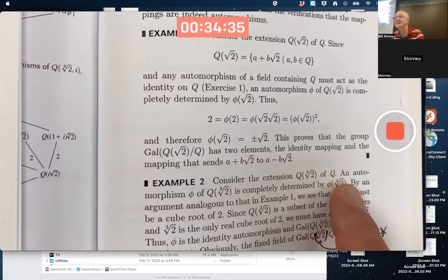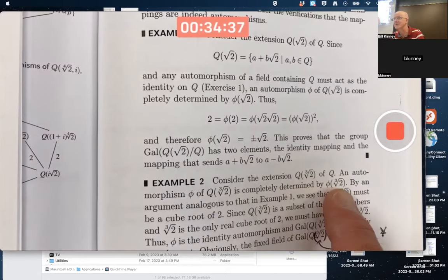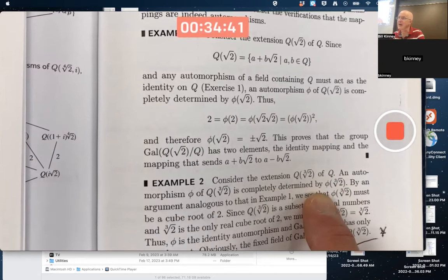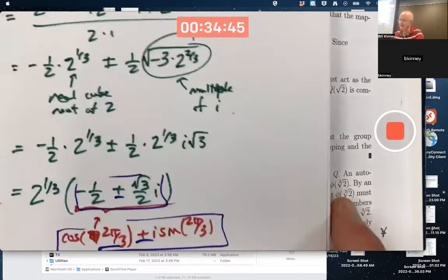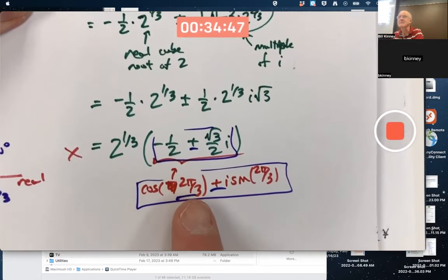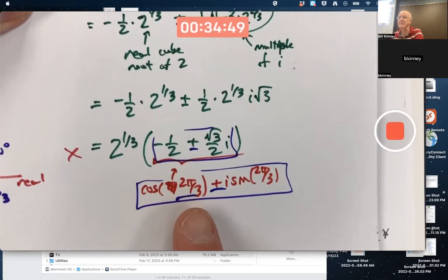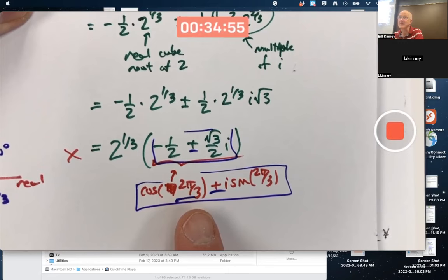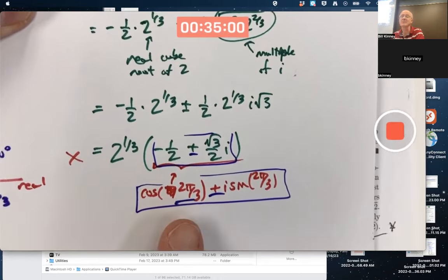Yes, it is a degree three extension. It's a three-dimensional vector space over the rationals, but it's not a splitting field for x cubed minus 2. I'd have to adjoin these other two numbers, which would make it a subfield of the complex numbers, not the real numbers. That's what I would have to do. The fundamental theorem of Galois theory does not apply to this example. I can't use it.